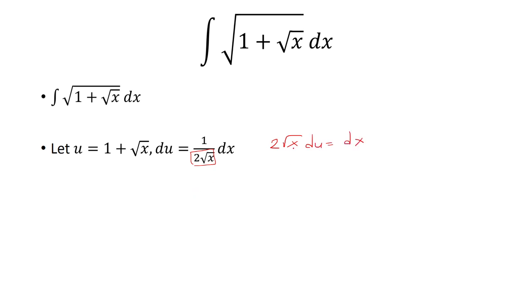I want to rewrite square root of x in terms of u. I know that u is equal to 1 plus square root of x, so u minus 1 will be square root of x. I'm going to replace that now. Square root of x will just be u minus 1.